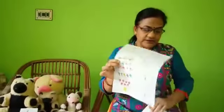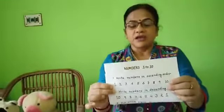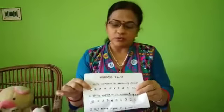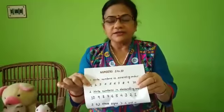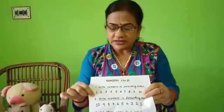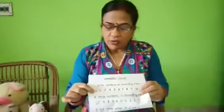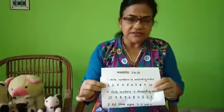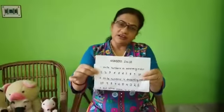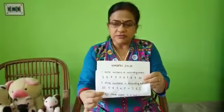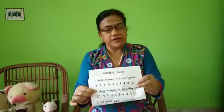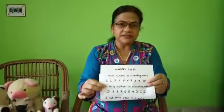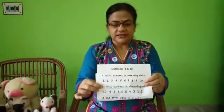Next, we will learn about ascending order and descending order. Ascending order means smaller number to greater number. The smallest number is one and the greatest number is ten. So we will start writing ascending order: one, two, three, four, five, six, seven, eight, nine, ten.